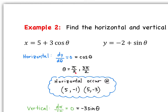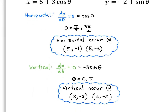Plugging both values into x and y: when θ = π/2, cos(π/2) = 0 so x = 5, and sin(π/2) = 1 so y = −2 + 1 = −1, giving the point (5, −1). When θ = 3π/2, cos(3π/2) = 0 so x = 5 again, and sin(3π/2) = −1 so y = −2 − 1 = −3, giving the point (5, −3). These are our two horizontal tangents.